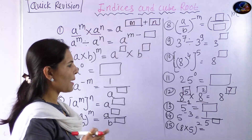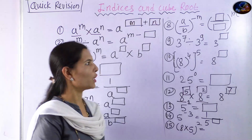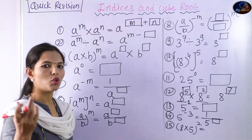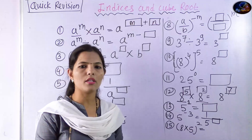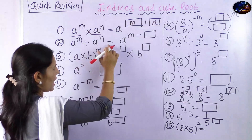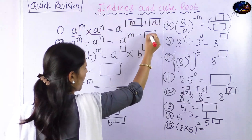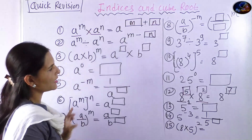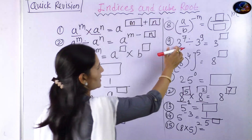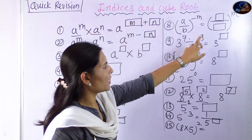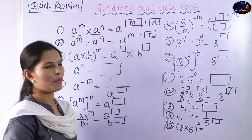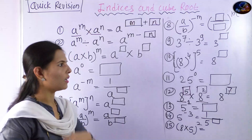We have understood those rules and examples. Now, a raised to m divided by a raised to n is equal to a raised to m minus n. For example, 3 raised to 7 divided by 3 raised to 9. There are two types of cases in this division example, which I will explain in detail.